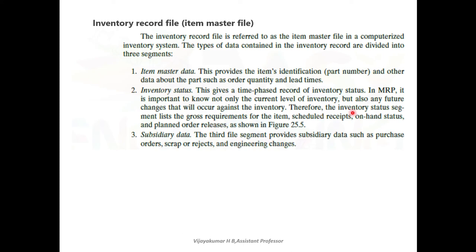The inventory status segment lists the gross requirements for the item, scheduled receipts, on-hand status, and planned order releases. It gives information on gross requirements, scheduled receipts to be received from suppliers, on-hand inventory already in the industry, and planned order releases for future forecasted demand. The third segment is subsidiary data, which provides data such as purchase orders, scrap or rejects, and any engineering changes in the product.